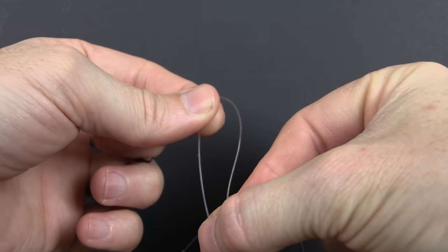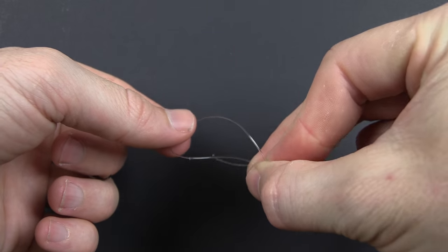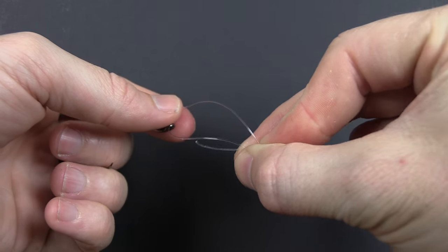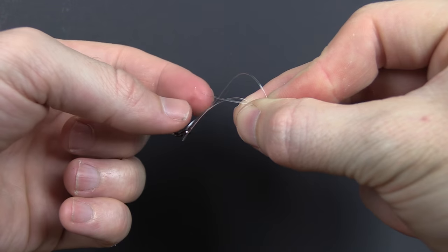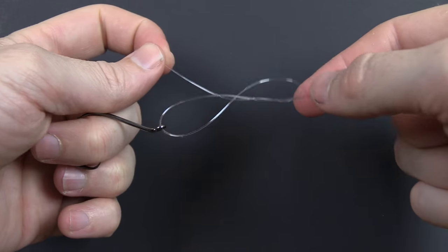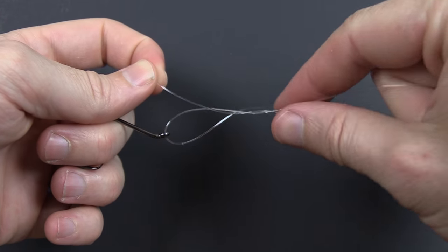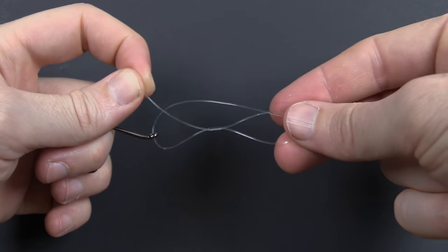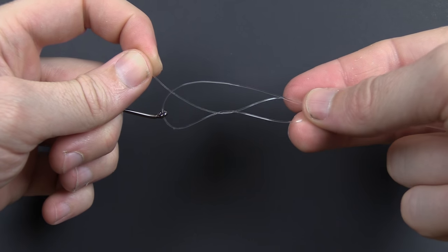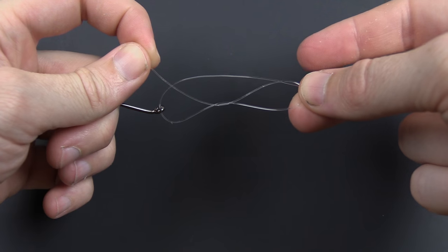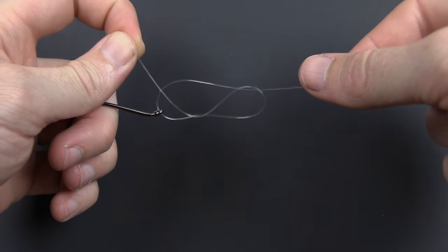And then from below the loop, you just take the tag end, go around and through the loop that you just created on the other side of it. Then pull it tight and you'll basically have this figure-eight. This will be the setup here. You can see it's just a couple turns.